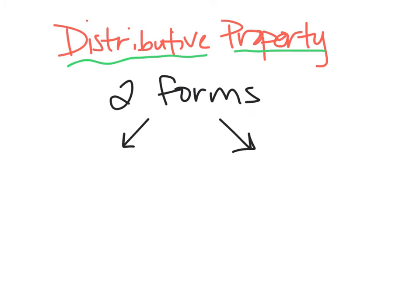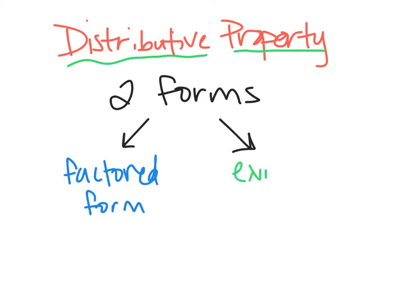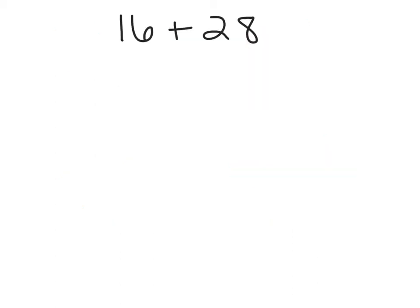Just as a reminder, there are two ways to write the distributive property, or two forms. The first form is factored form, and the second form is expanded form. We have talked about expanded form before, both with the distributive property as well as with exponents. Expanded form just means that something is stretched out. Factored form means that it's compact and put together into a nice little package. We are now going to use the GCF, which was 4, to rewrite the sum — meaning addition — of 16 and 28 using the distributive property.